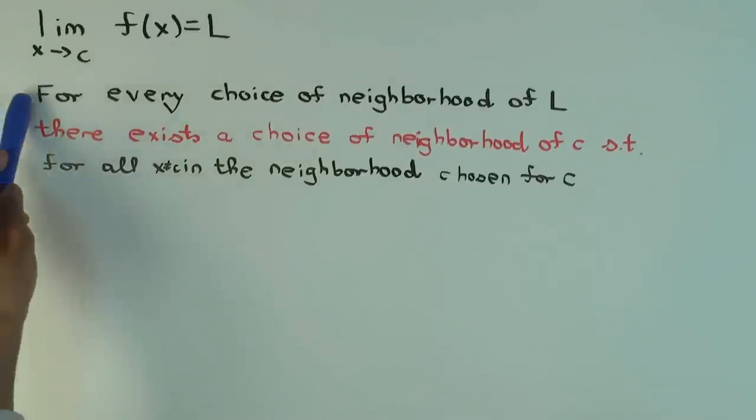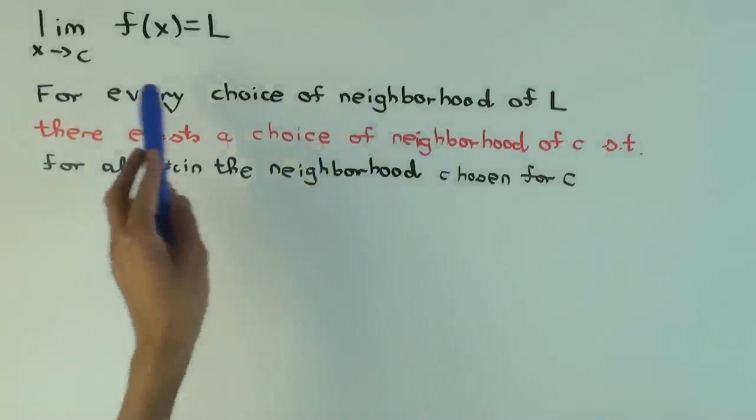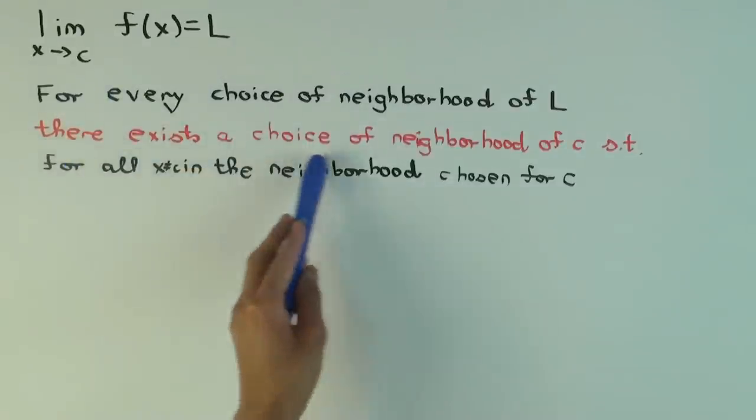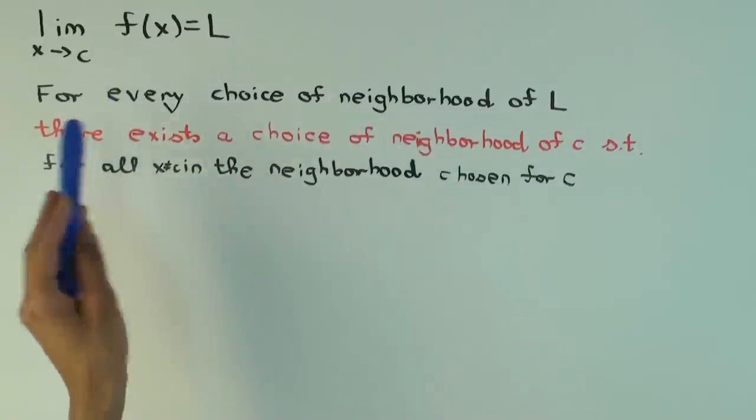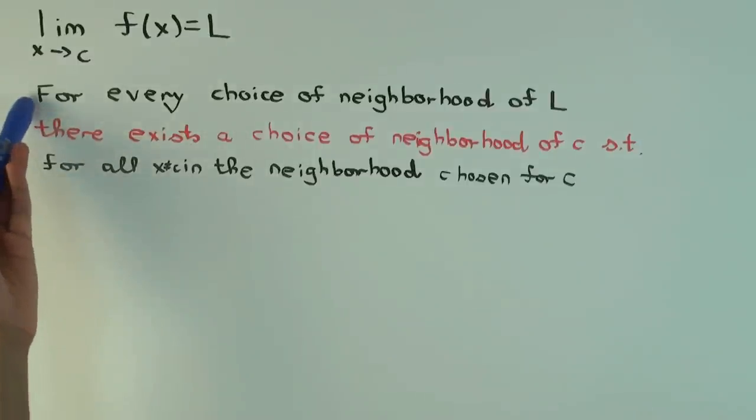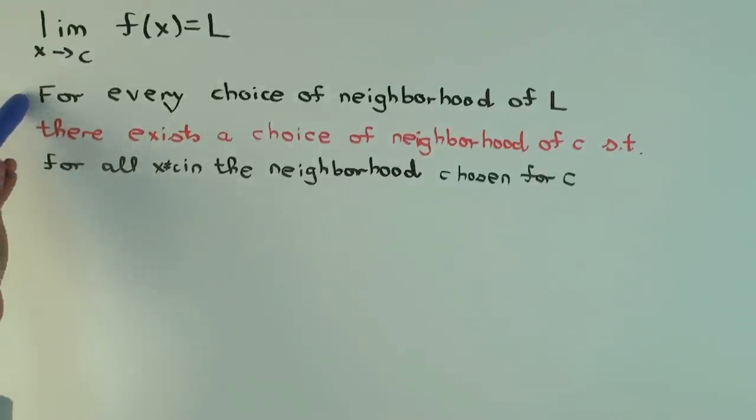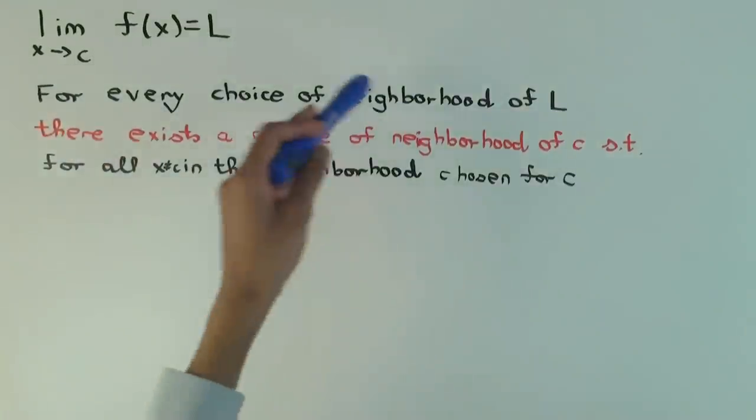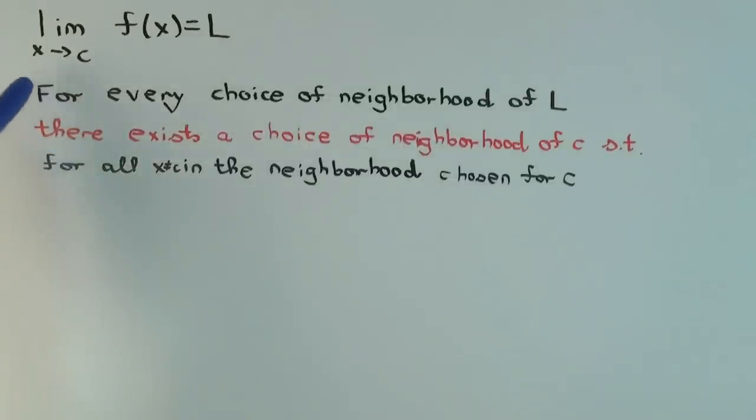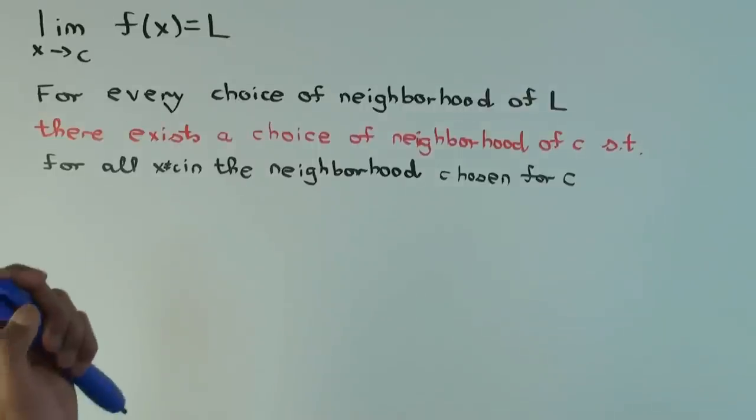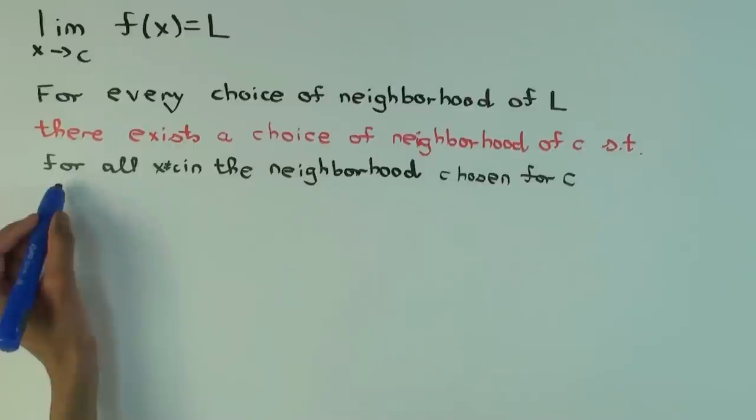So I'm writing in black for the choices that the skeptic makes and in red for the choices the prover makes. Actually, that's a reverse of what I did in the other video, but that's okay. They can change colors. So if you've seen that limit game thing, this color pattern, the black matches the skeptic choices and the red matches what the prover chooses. But if you haven't seen that, it's not an issue. Just read it as a single statement.